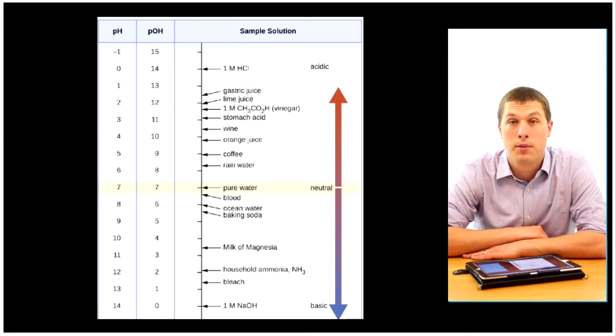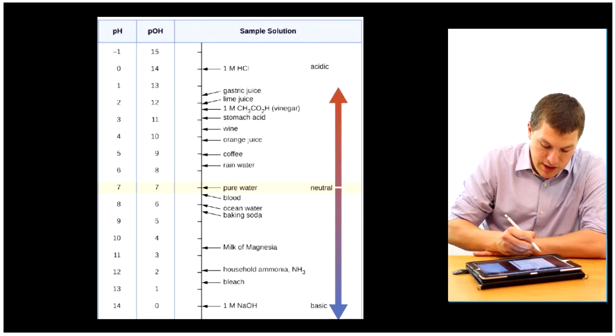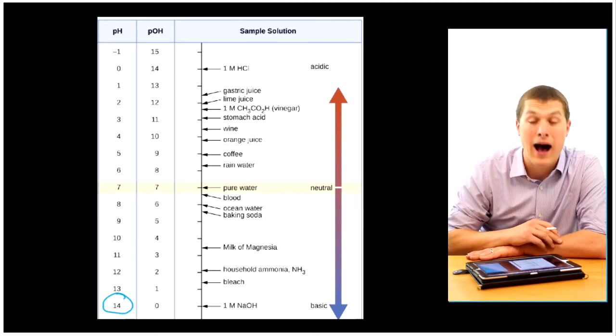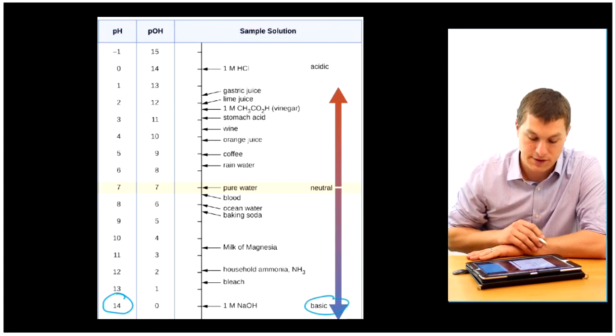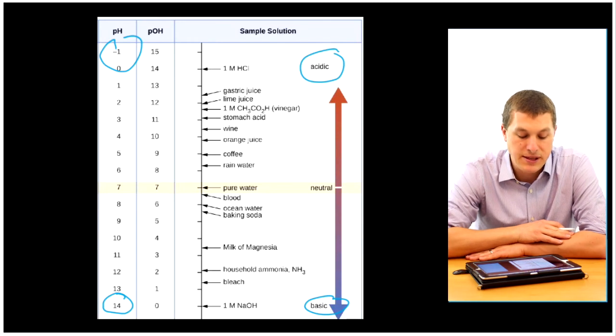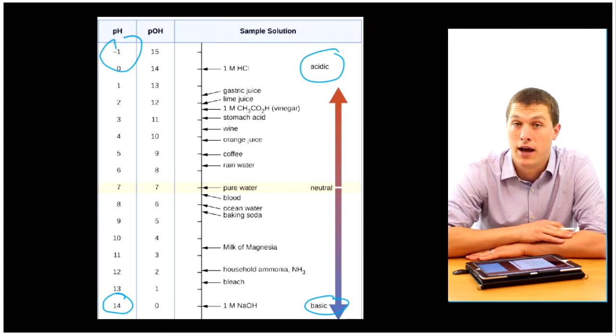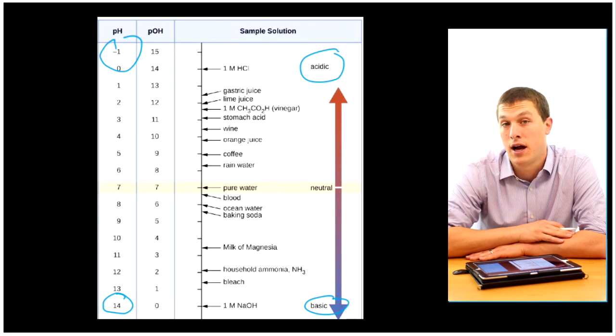So here you see a list of pHs and a bunch of different solutions that range from acidic to basic. And what you'll notice is that if you have a high pH, you have an acidic solution. And what that pH and pOH tell you about is the concentration of hydrogen ions and hydroxide ions, respectively.